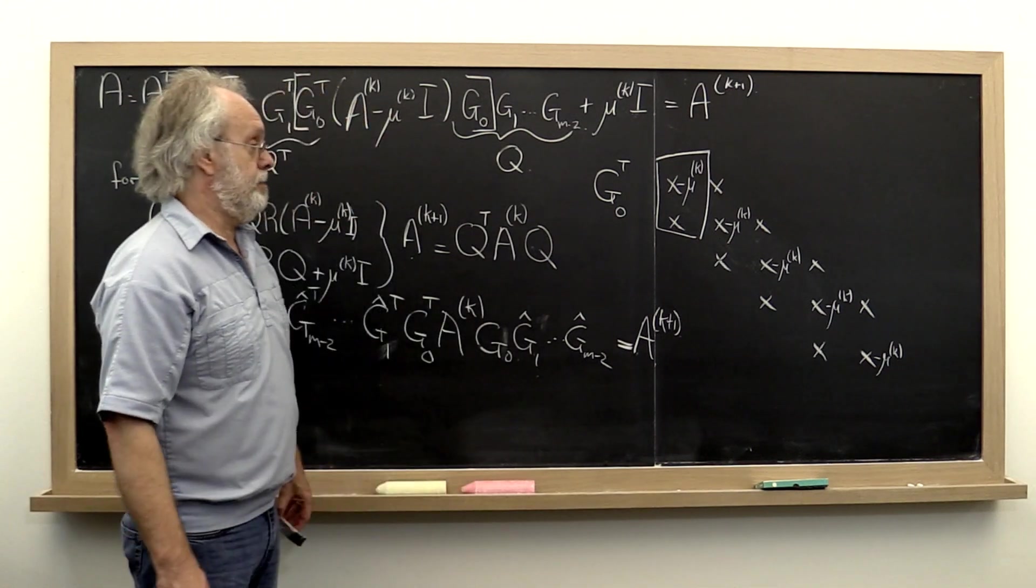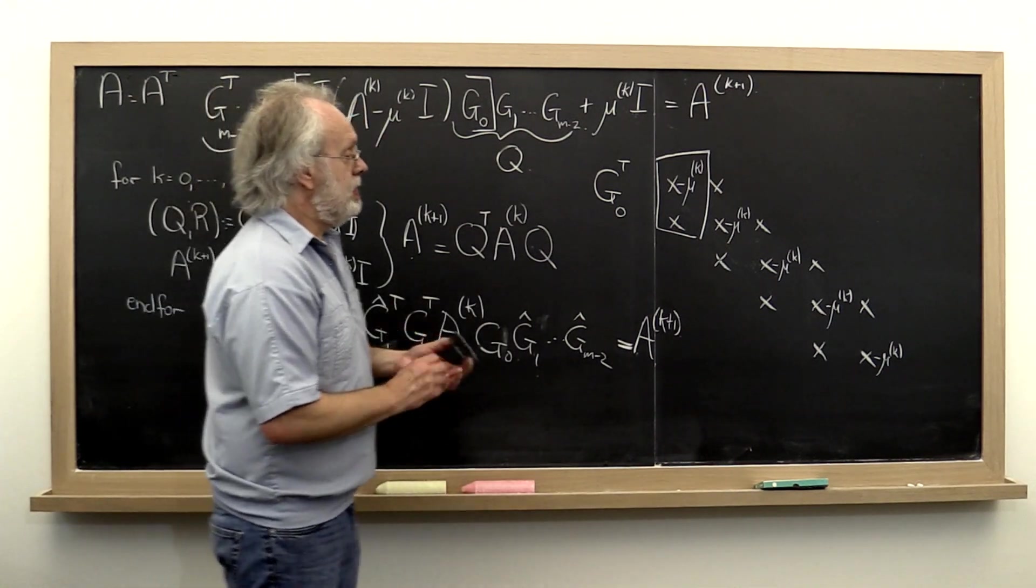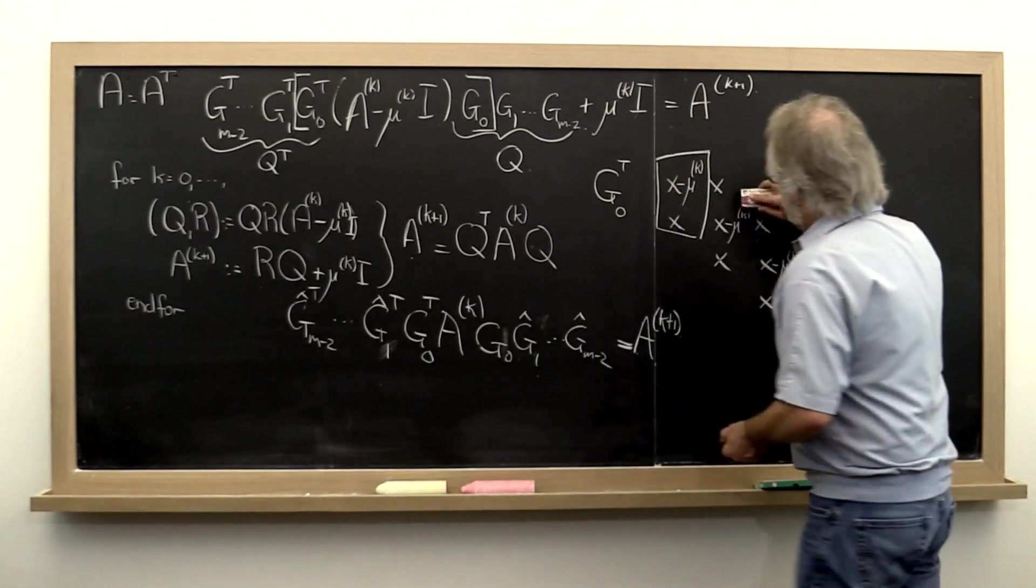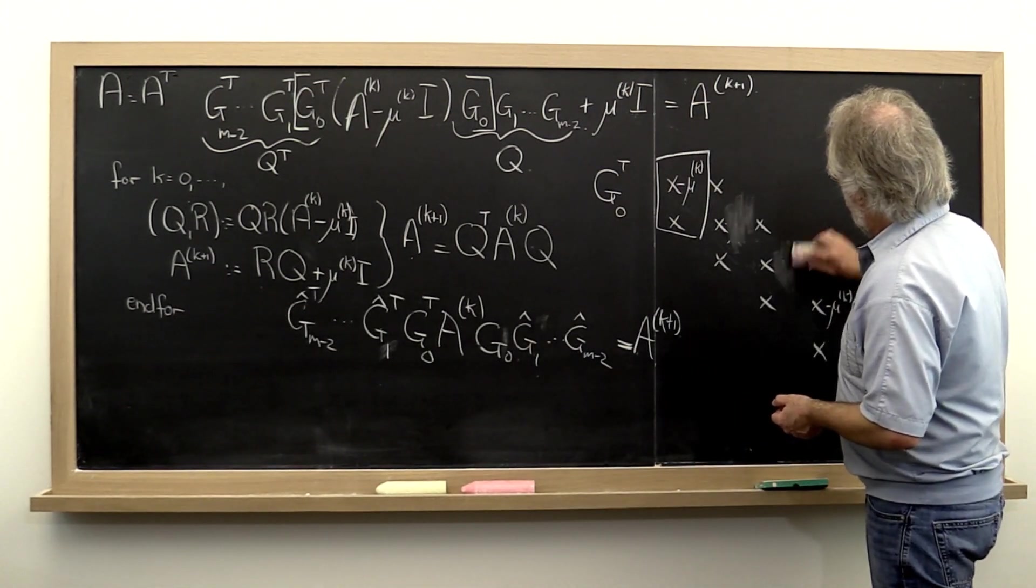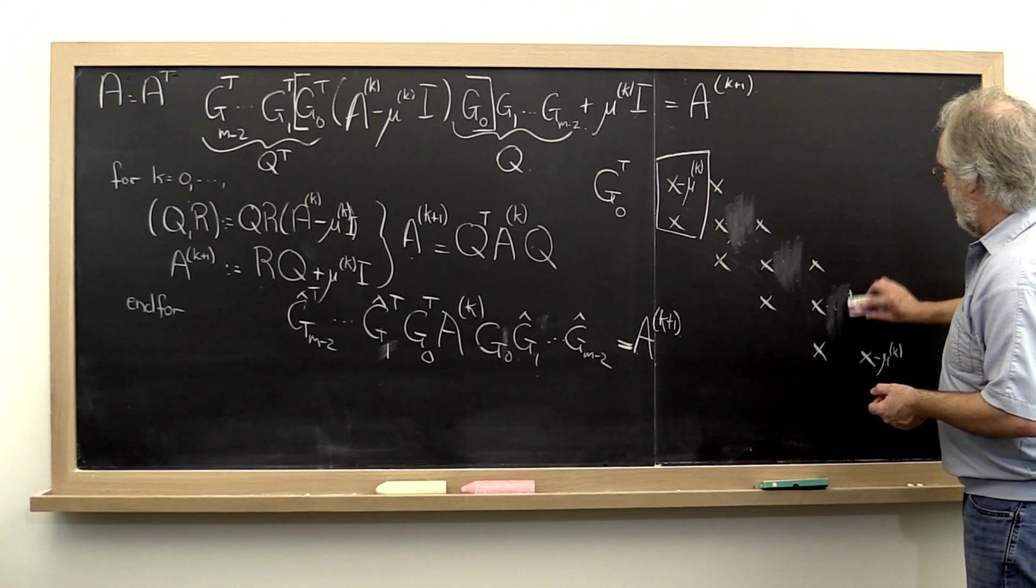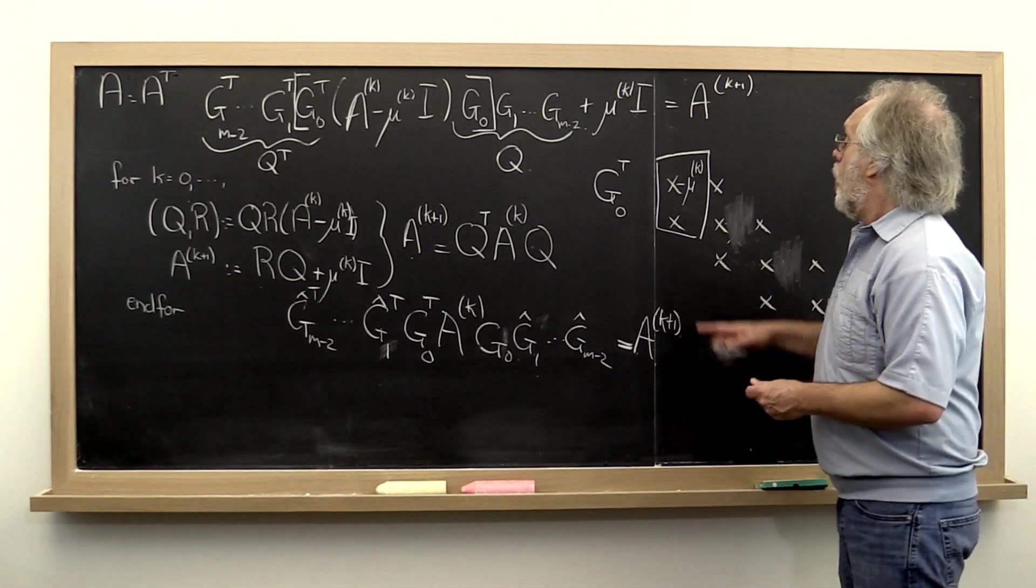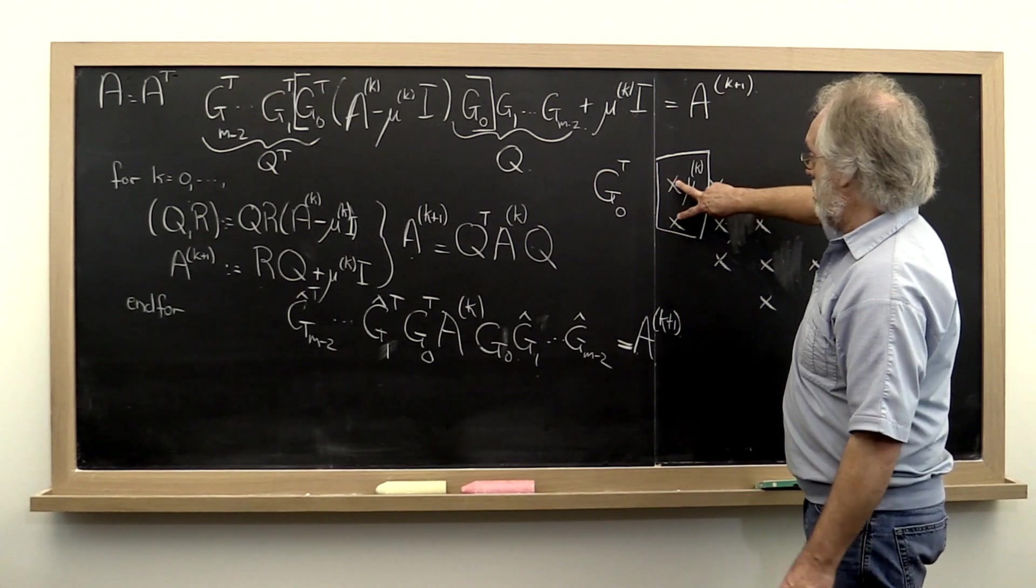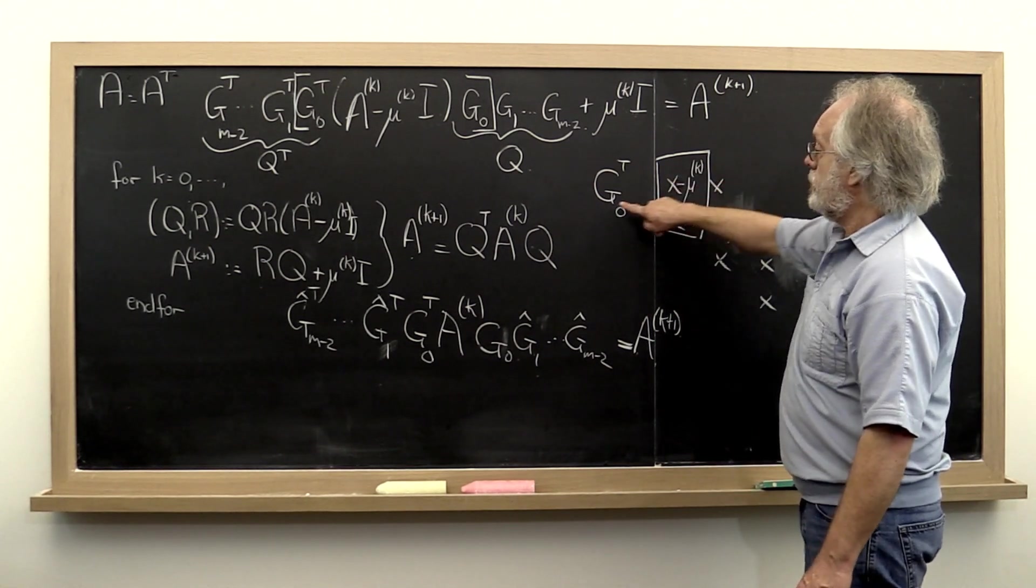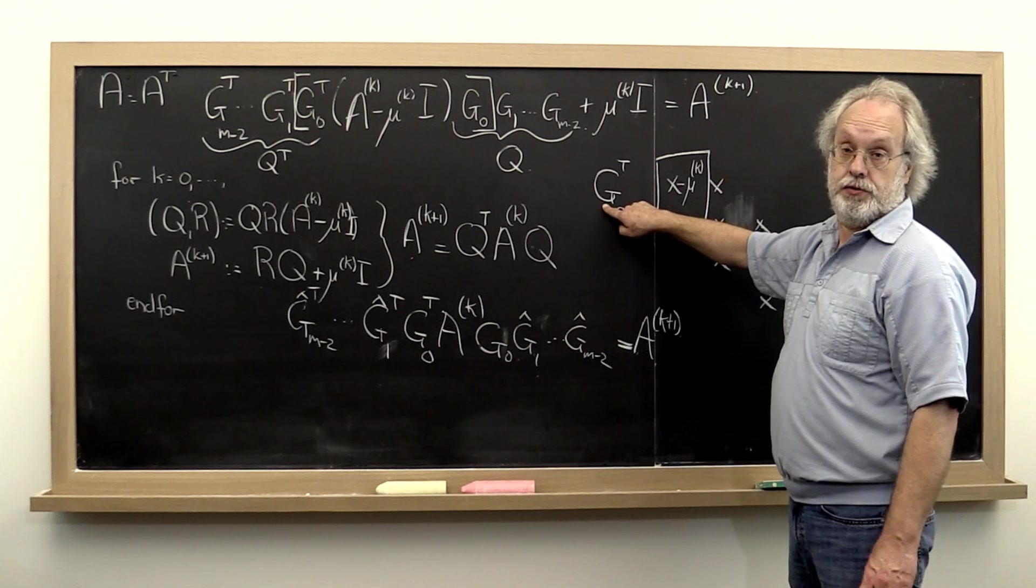What does that mean? That means that we don't need to subtract off our shift off of every entry of the diagonal. We merely need to form these two elements right here so we can compute our first Givens rotation.